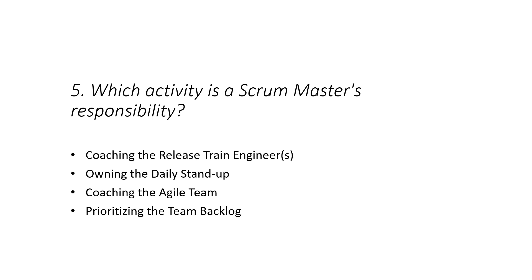Which activity is a Scrum Master's responsibility? The options are: coaching the Release Train Engineers, owning the daily standup, coaching the agile team, and prioritizing the team backlog. Coaching the RTE is not a Scrum Master's role. Owning the daily standup belongs to the team. Prioritizing the team backlog is the product owner's responsibility. The right answer is coaching the agile team.